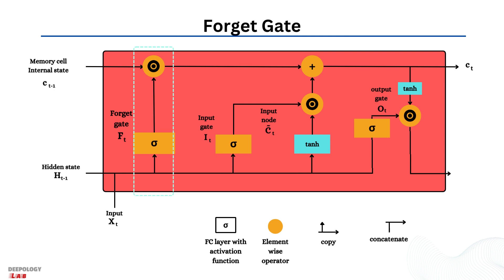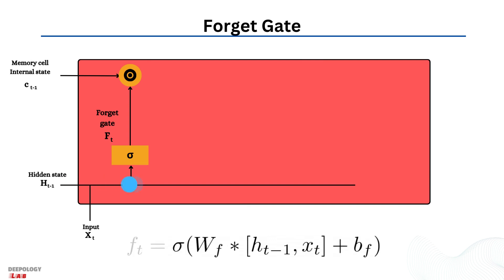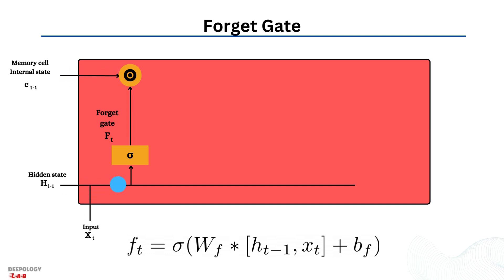In the forget gate stage, the LSTM network determines which elements of the cell state are relevant based on the previous hidden state and the new input data. These inputs are fed into a cell that outputs a vector where each element is a value between 0 and 1, achieved using a sigmoid activation function. This network is trained to produce a value close to 0 for information deemed irrelevant and close to 1 for relevant information. These output values are then multiplied element-wise with the previous cell state, down-weighting the irrelevant parts by a factor close to 0.